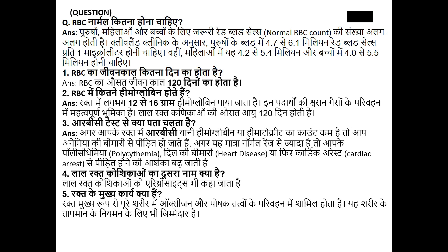अगर RBC की मात्रा नॉर्मल रेंज से ज्यादा है, तो पॉलिसाइथेमिया, दिल की बीमारी, हार्ट डिजीज या कार्डियक अरेस्ट से पीड़ित होने की आशंका बढ़ जाती है। लाल रक्त कोशिकाओं का दूसरा नाम क्या है? लाल रक्त कोशिकाओं को एरिथ्रोसाइट्स भी कहा जाता है। रक्त के मुख्य कार्य क्या हैं? रक्त मुख्य रूप से पूरे शरीर में ऑक्सीजन और पोषक तत्वों के परिवहन में शामिल होता है।